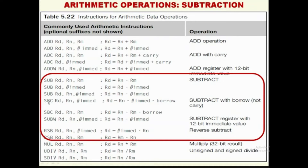Subtract with carry is also available. SUBW uses a 12-bit immediate — whenever we see the W suffix it indicates a 12-bit immediate value. SUBW RD, RN, #immediate means RD = RN - immediate, subtracting a 12-bit immediate value from RN and storing the result in RD.